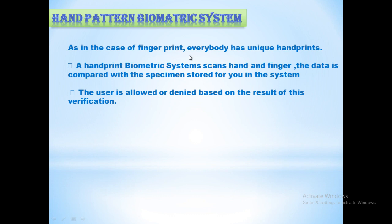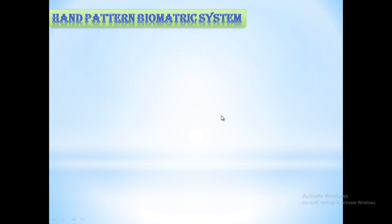As in the case of fingerprints, everybody has a unique hand print — every person's hand print is different. A hand print biometric system scans the hand and fingers; the data is compared with the specimen stored in the system. In hand print scanning, both your hand (palm) and fingers are scanned. If that data matches what is stored in the system, only then the system opens.